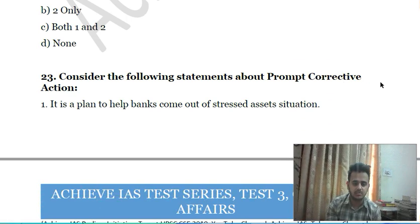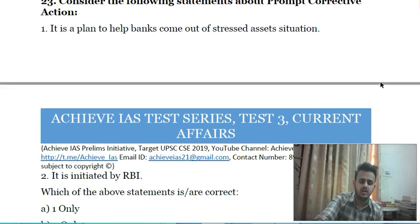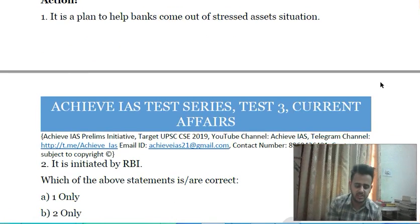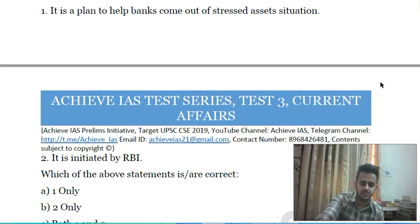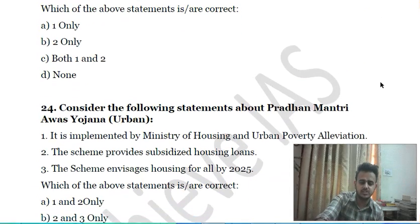Twenty-third question: consider the following statements about Prompt Corrective Action — first, it is a plan to help banks come out of a stressed asset situation; second, it is initiated by the RBI. Choose the correct answer.